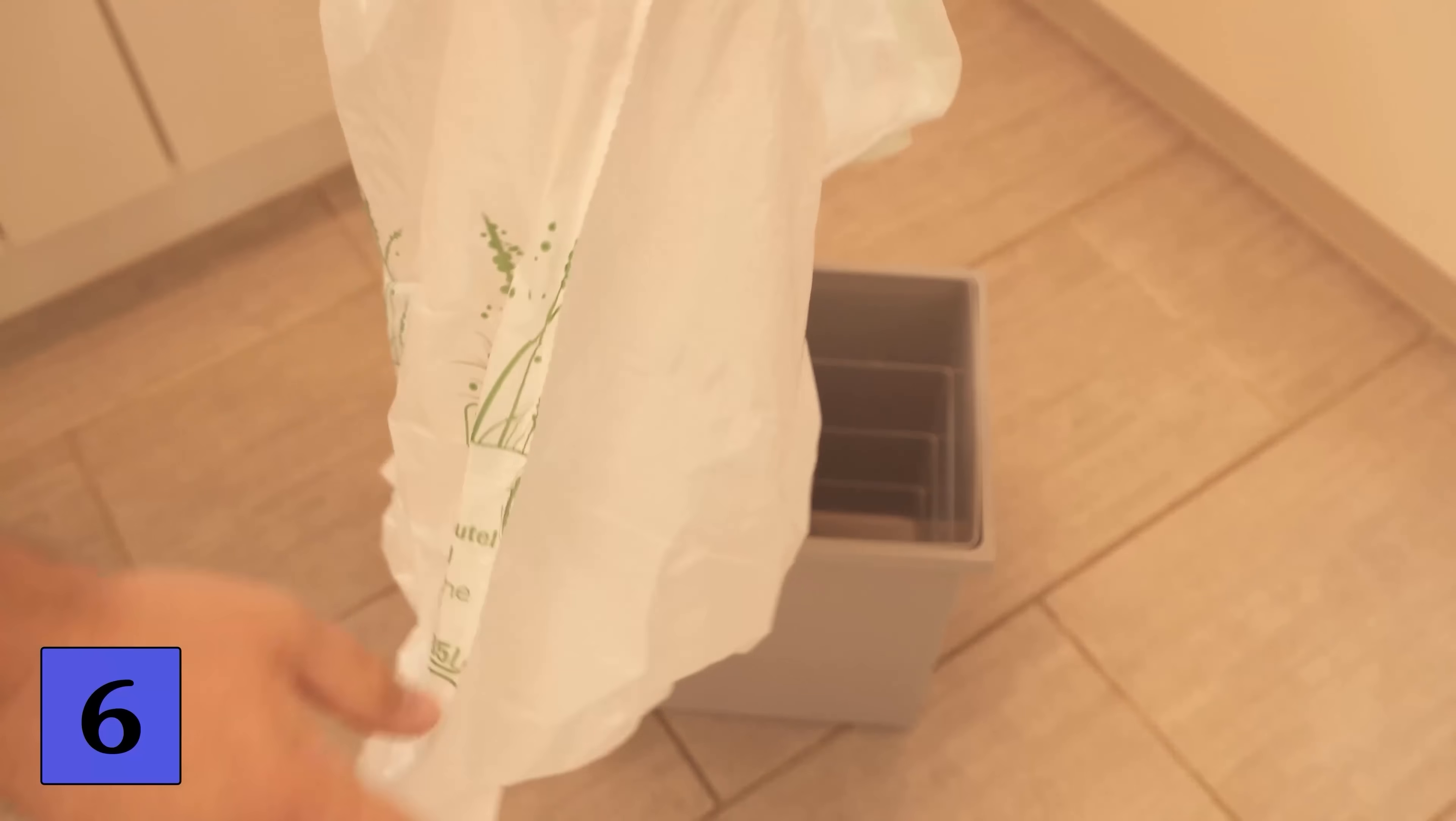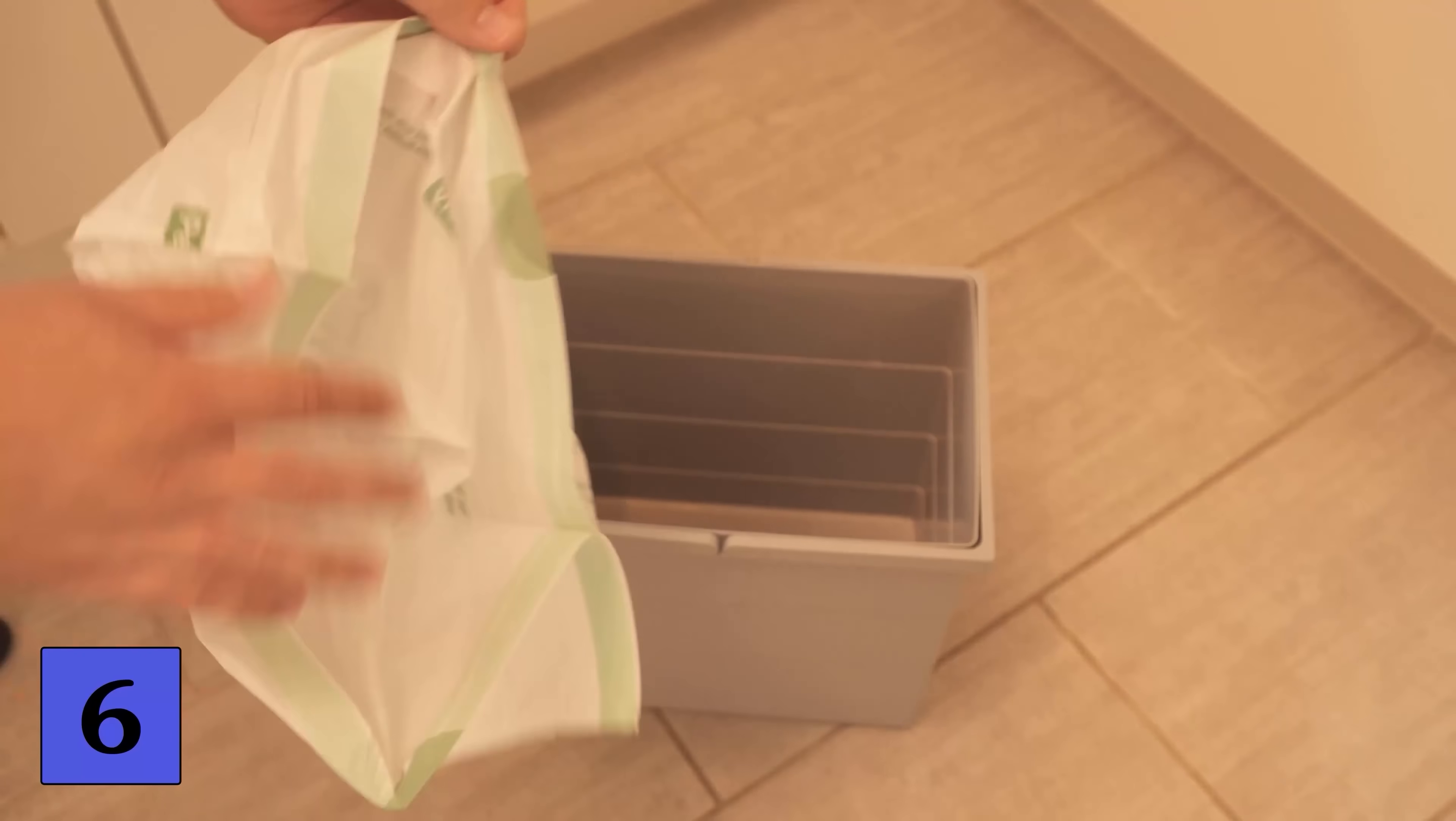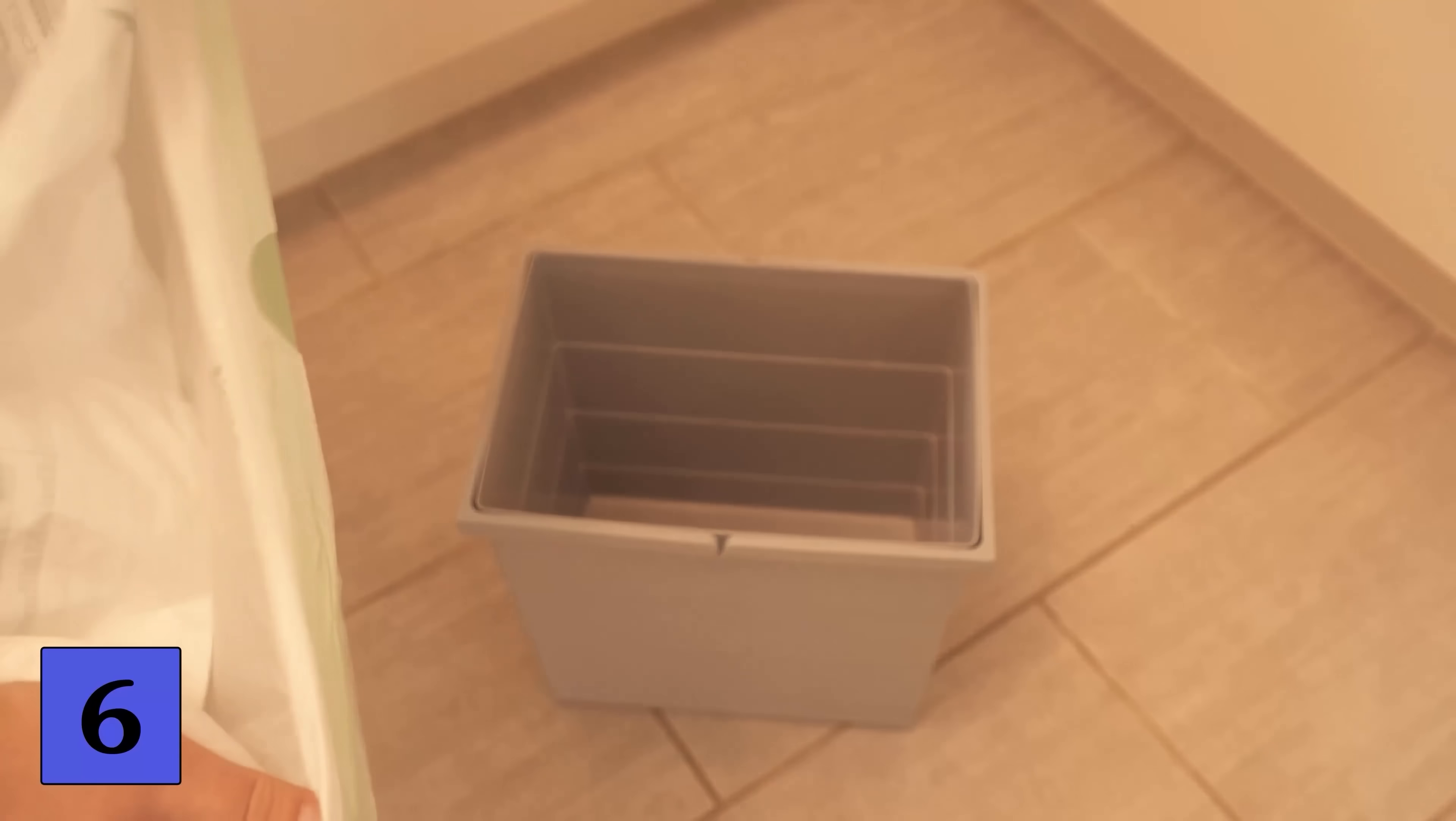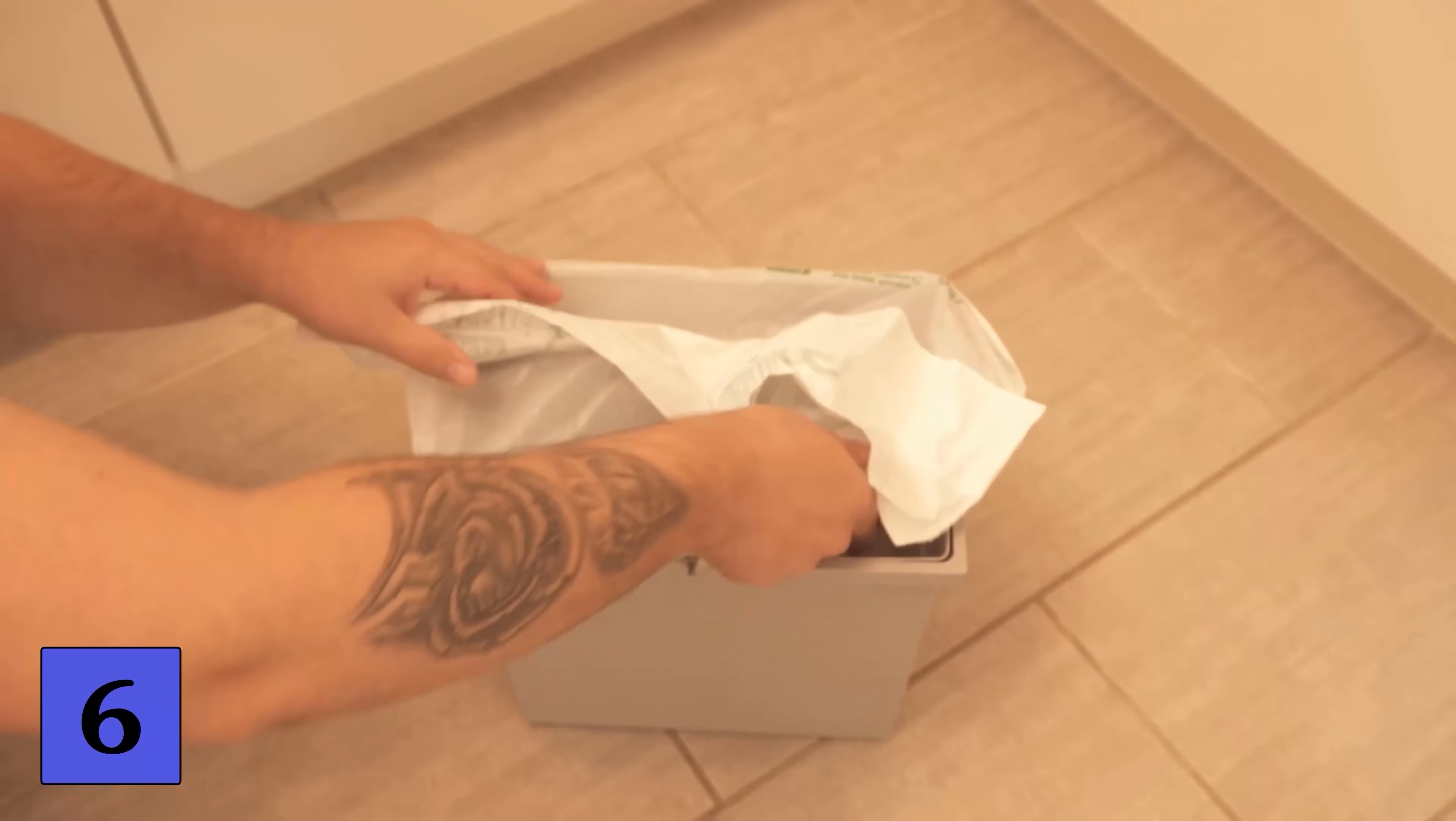There is a method that makes it much easier. To do this you tear off your bin liner again. But now you put it over the edge the wrong way around. As you can see here. Then you have already placed it perfectly on the edge.